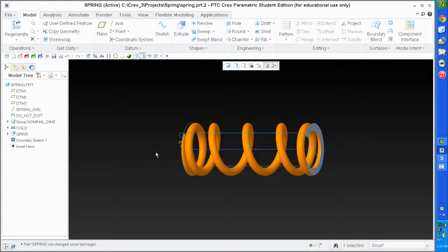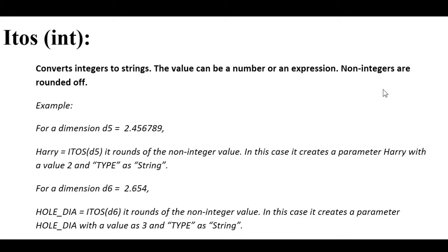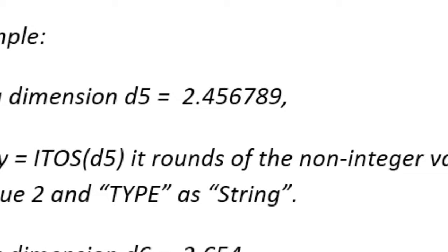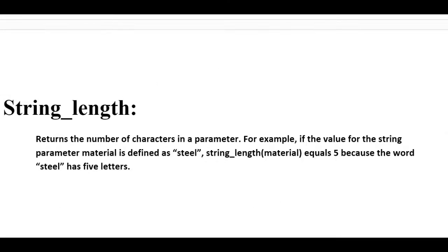We're going to use three string functions. The first is itos - integer to string - which converts any integer into a string (just text). For example, 2.4645679 is a real number, not an integer. When you convert that to a string it just rounds off to a whole number - so you get a 3. What we need to do is manipulate this to include the digits we need for our decimal. We'll move the decimal place over two spots to capture two extra characters, so when we do itos it contains the decimal portion we need.